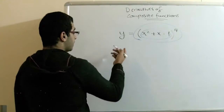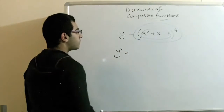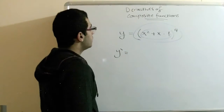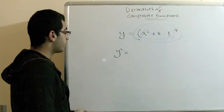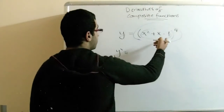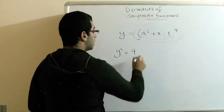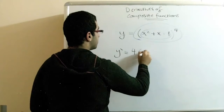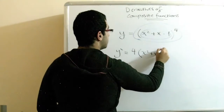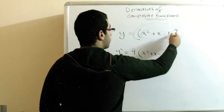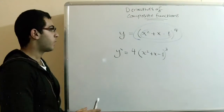What we do in getting the derivative of this function is very simple. We deal with the whole expression as a single term. Getting the derivative: we bring down the 4, keep the expression as it is, and then 4 minus 1 gives us 3. This is our first part.